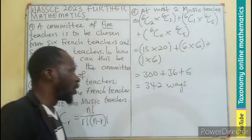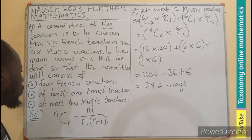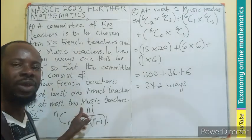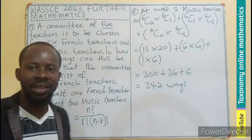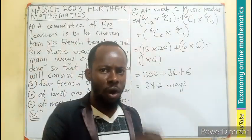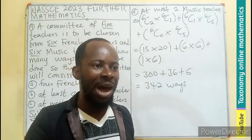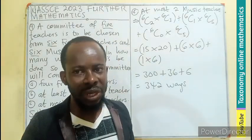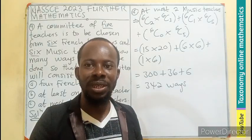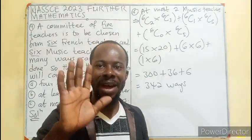So the number of ways to arrange the committee with at most two music teachers is 342. I believe the concept, even though long, resonates with you. This is how we arrange using combination in terms of compound effect. Thank you for watching. Like, share, and comment. Bye-bye.